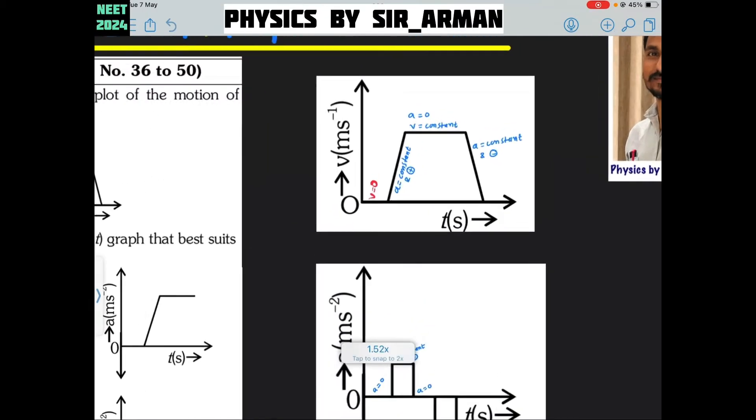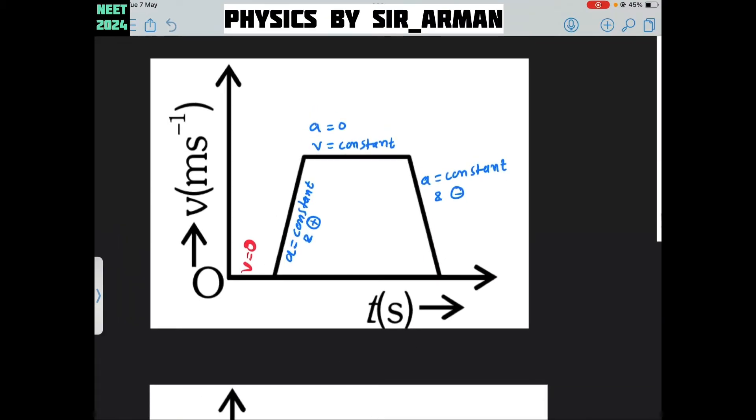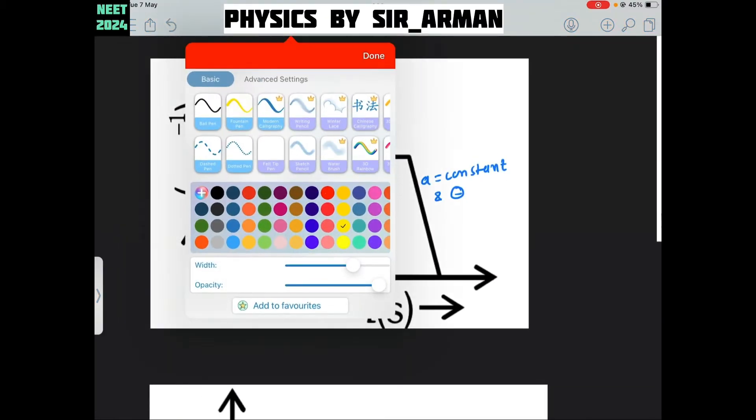The same graph I have drawn here. Let us try to understand that graph. The velocity time graph which is given here that we are trying to analyze.